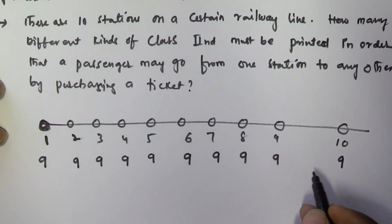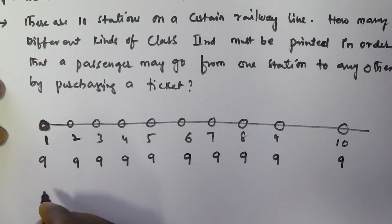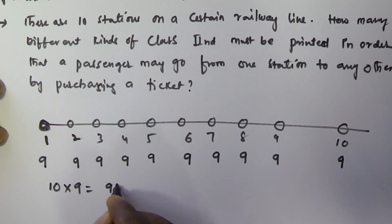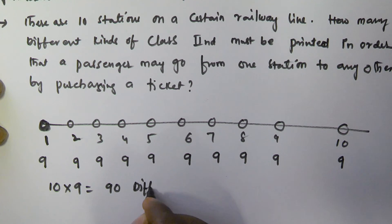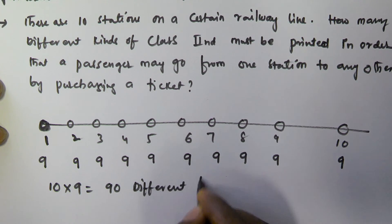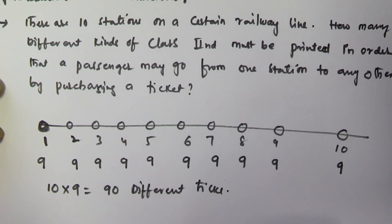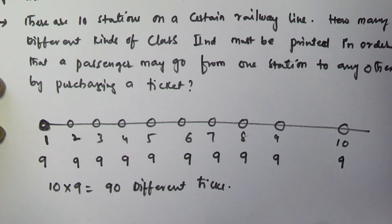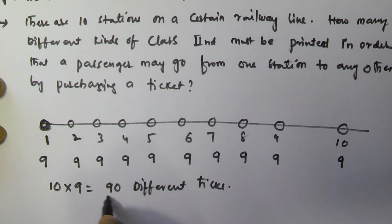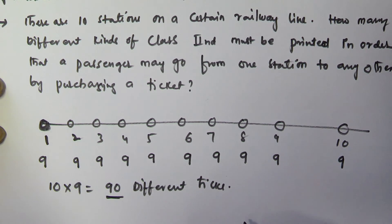So we have to add all of them, which gives us 10 into 9 equals 90 different tickets. So if there are 10 stations on a certain railway line, there are 90 different tickets needed to go from one station to any other station. The answer is 90 different tickets. Thank you very much for watching this video, and please subscribe to my channel.